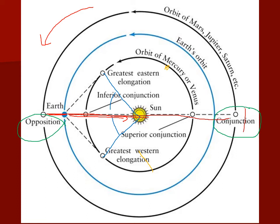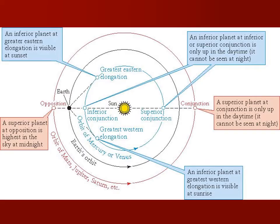Two other orientations for a superior planet occur when the planet is at right angles to the sun as seen from Earth — straight up at sunset or sunrise. Those positions are called quadrature. This is the same diagram from page 81 in the book, which includes all the labels for these orientations.